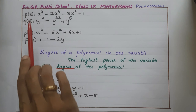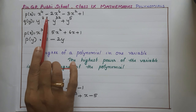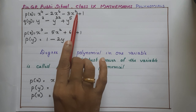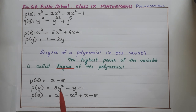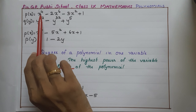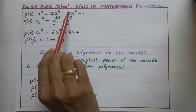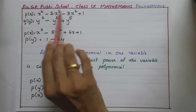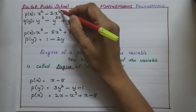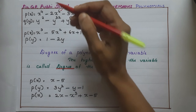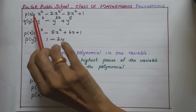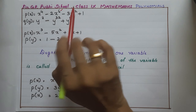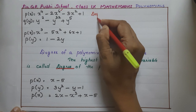Consider the polynomial P(x) = x⁴ - 2x⁶ - 3x² + 1. This is a polynomial in x. Check the powers of the variable: here 4, here 6, here 2, and here it is a constant. Which is the highest power? 6. So this highest power we are calling the degree of this polynomial. For this polynomial, the degree is 6.